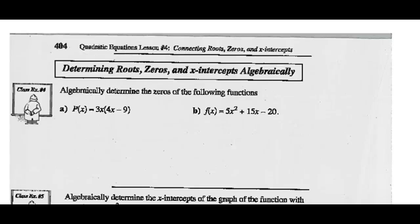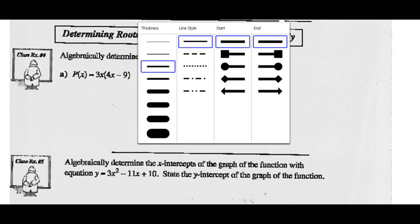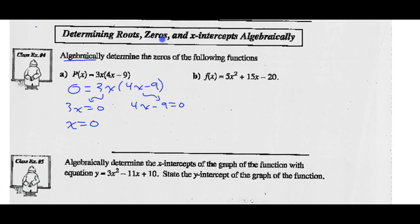Determining roots, zeros, and x-intercepts algebraically. Algebraically determine the zeros of p(x) = 3x(4x - 9). To find the zeros, let the function equal 0: 0 = 3x(4x - 9). Use the zero product law — let each variable factor equal 0: 3x = 0 or 4x - 9 = 0. Here x = 0; here add 9 and divide by 4. So the zeros of this polynomial function are 0 and 9/4.